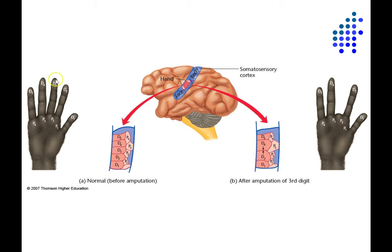So then what happens after you remove a digit — let's say the middle finger? Before this, most neuroscientists would have assumed that the part of cortex representing that digit would just go quiet, having lost its input. Merzenich and his colleagues found otherwise. They went back in and evaluated the mapping several months after the digit had been amputated. The part of cortex that used to represent the third digit is not quiet — rather, it's come to represent the adjacent two digits, the fourth and the second, and part of the adjacent palm area. This is a remarkable reorganization of the cortex for an adult animal.